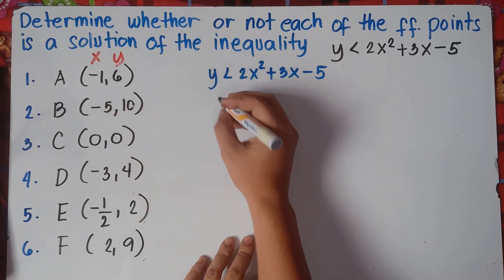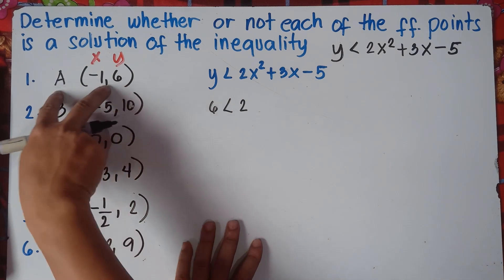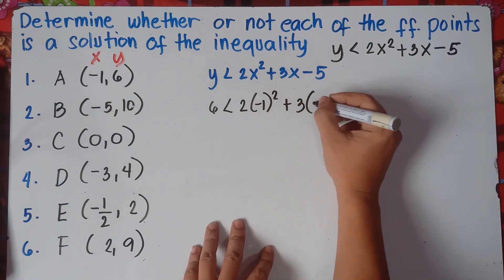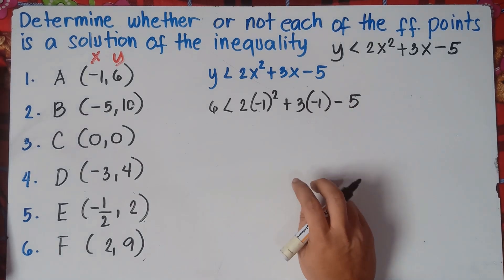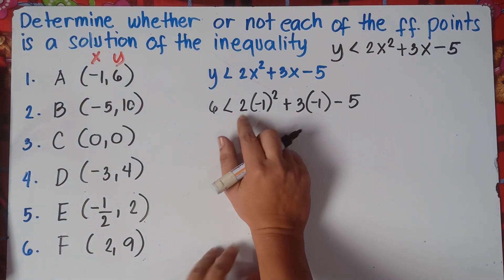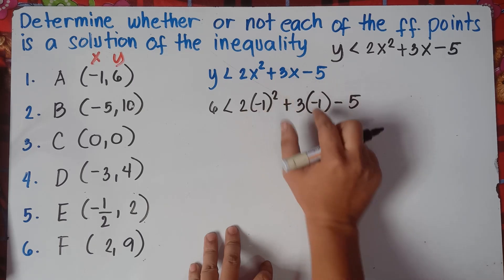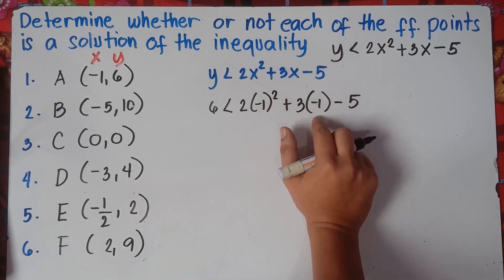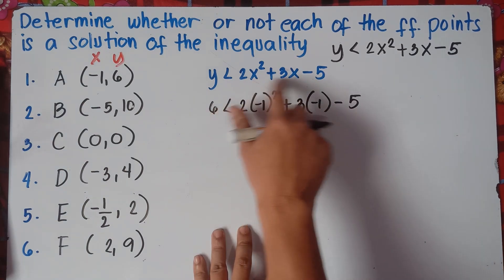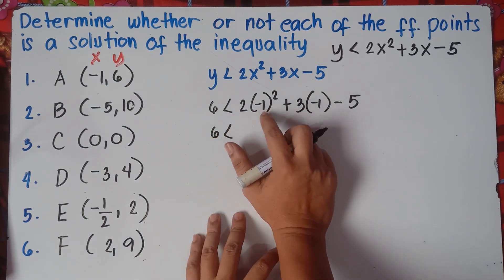Substitute the value of y. Our y is 6. So: 6 less than 2 times negative 1 squared plus 3 times negative 1 minus 5. The 6 came from y, and negative 1 is our x value. If we have a variable together with a number it means multiplication — that's why 3x means 3 times x. Remember PEMDAS: Parenthesis, Exponents, Multiplication, Division, Addition, Subtraction. Exponents come before multiplication.